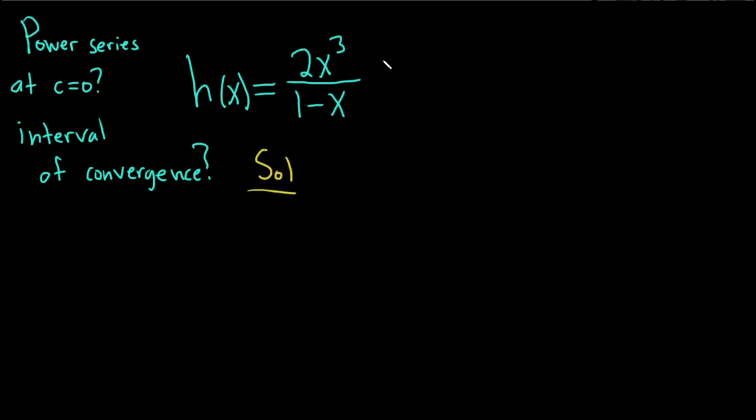So we're going to use a very powerful formula. The formula tells us that if we have 1 over 1 minus x, this is equal to the infinite sum as n runs from 0 to infinity of x to the n. And this is true if the absolute value of x is less than 1.